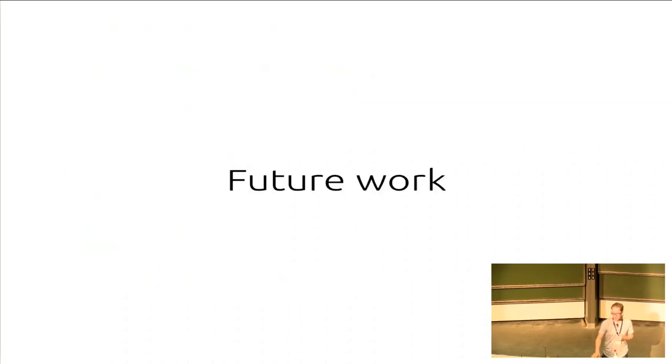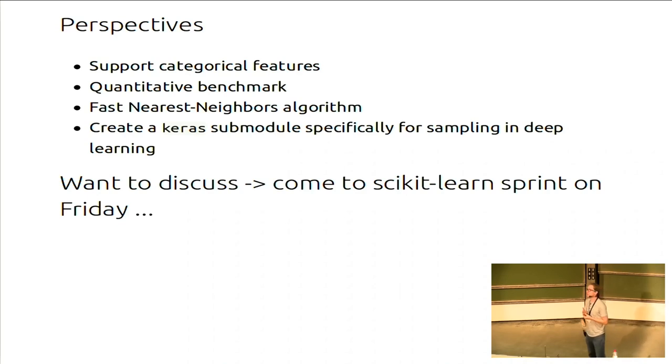And then as future work, we need to see how to handle categorical data because it's not something that we check. I didn't mention here, but also we don't manage anything with regressions, so it's something that could be interesting. We still need some quantitative benchmarks just to know when to apply a method or not. We have a bottleneck with the nearest neighbors because there are some methods that are based on that. So we need to have very fast nearest neighbors. And we are thinking about creating something specifically for deep learning and more specifically for Keras where we could make upsampling inside the layers or something like that. That's an idea of Olivier Grisel. So we are thinking maybe to do something in there.